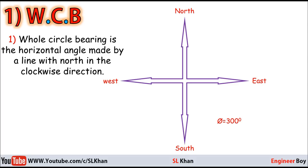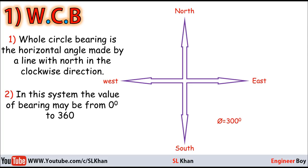The Whole Circle Bearing is the horizontal angle made by a line with the north-south line in the clockwise direction — here, north means the north pole direction. So Whole Circle Bearing is always measured clockwise from the north. Also remember, in this system the value of bearing may range from 0 degrees to 360 degrees.